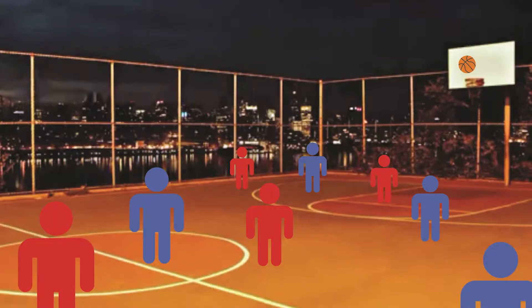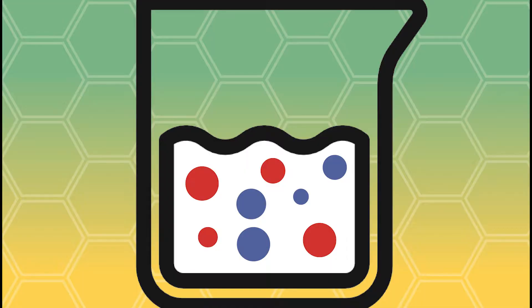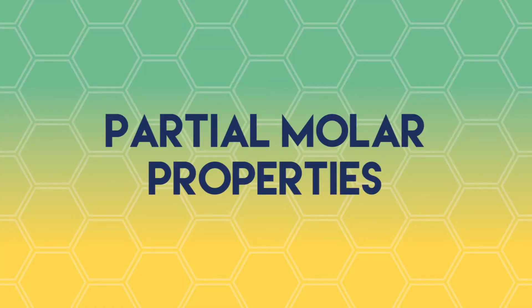When you are watching a basketball game, say a match between two PBA teams, each player has a contribution to the team, whether it be in scoring or rebounds. Now, imagine the players of a team as components of a solution, and those points and rebounds as their partial molar properties.